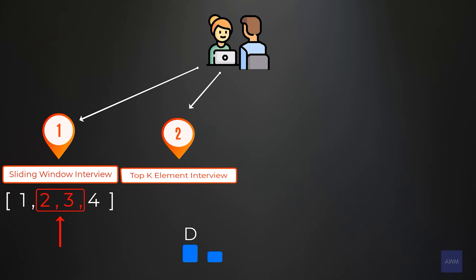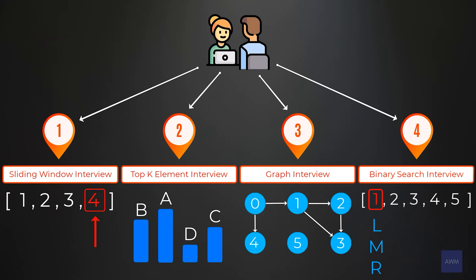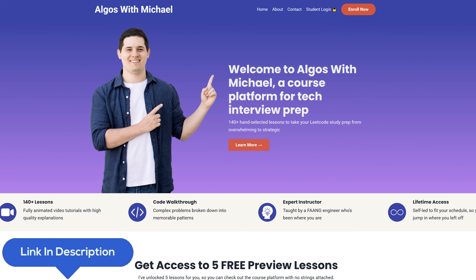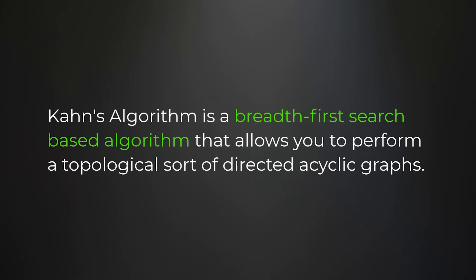In this video, I'm going to share one of the lessons from my new course, Mastering Topological Sort Graph Problems, which is now available on algoswithmichael.com. So what is Kahn's algorithm? Kahn's algorithm is a breadth-first search based algorithm that allows you to perform a topological sort of directed acyclic graphs.